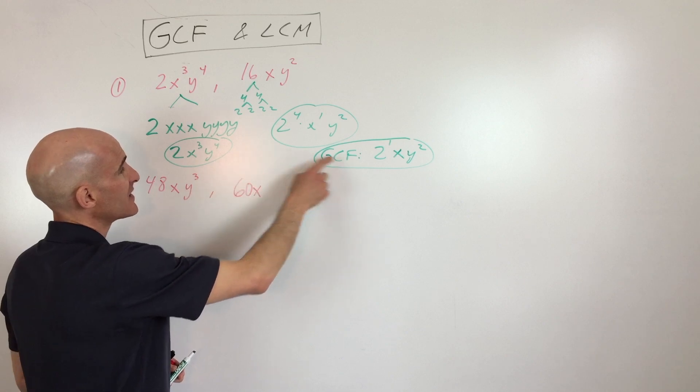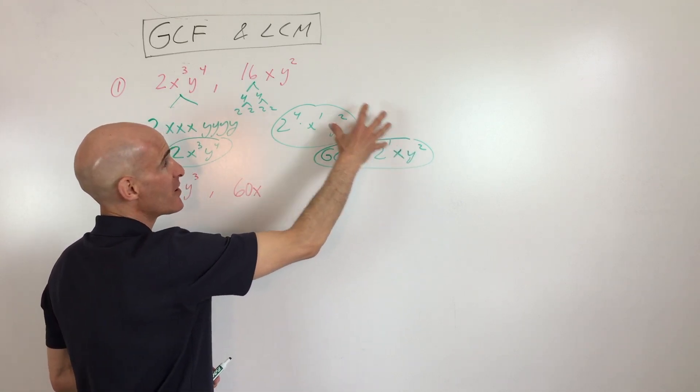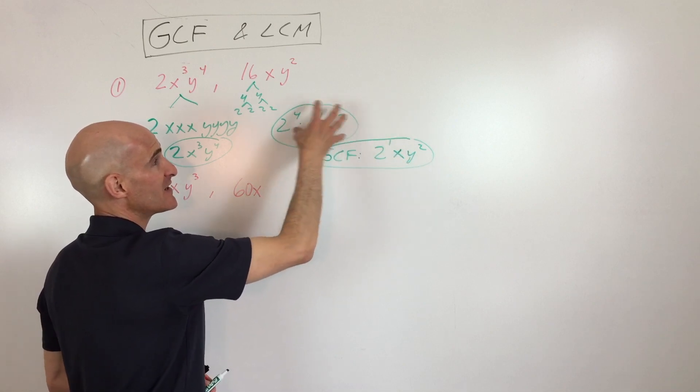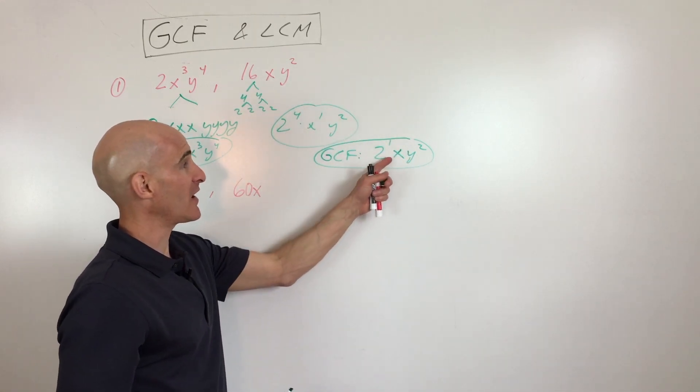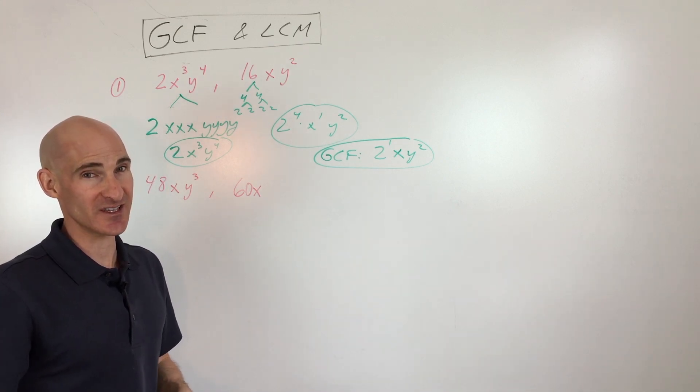But if we were to pick, let's say, instead of 1 x, 3 x's, like x³, this would be too large. It wouldn't go into or divide into this quantity evenly. It would have too many x's. So that's why you're actually doing the opposite. You're choosing whatever occurs the least.